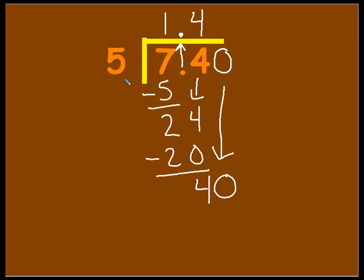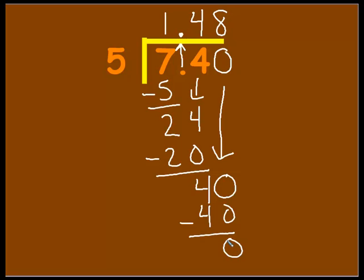Now we can say 5 goes into 40 eight times, and 8 times 5 is 40. We can stop when we have a zero remainder. When you're dividing with decimals, you don't stop until your remainder is zero, because you can't report it any other way except in decimal form.